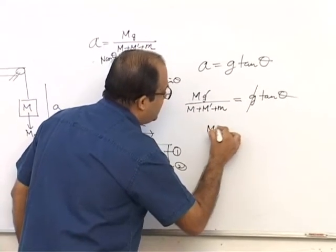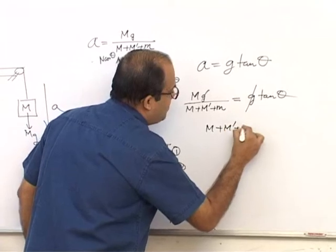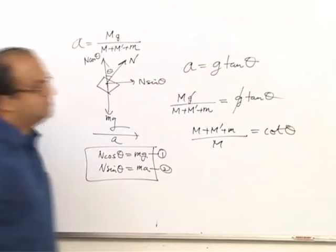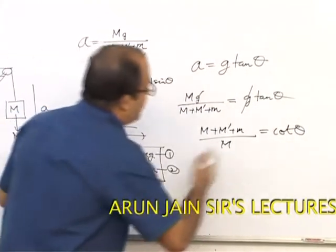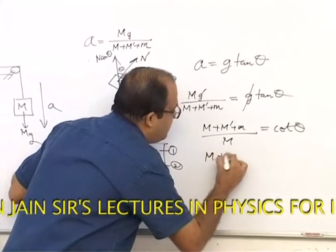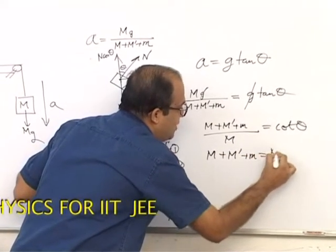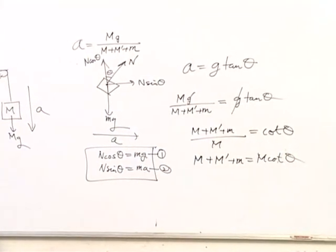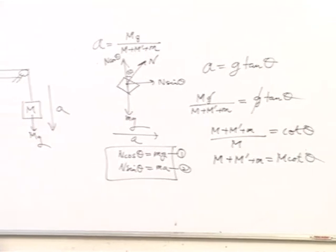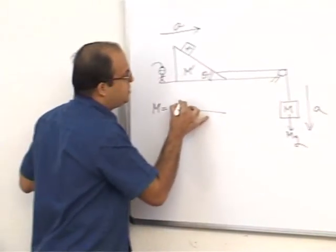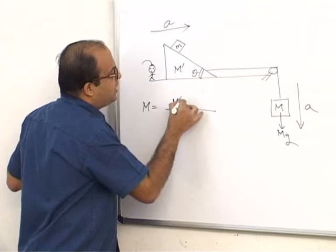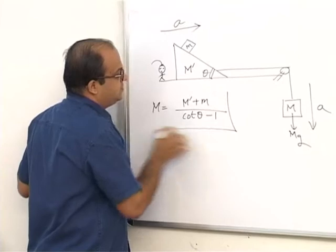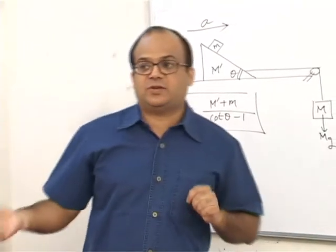So g cancels out. We can write this as M plus M dash plus m by capital M equal to cot theta. Right? Simple. So now we can cross multiply. M plus M dash plus m equal to M cot theta. So we can solve for capital M. Capital M becomes M dash plus small m by cot theta minus 1. That's all.